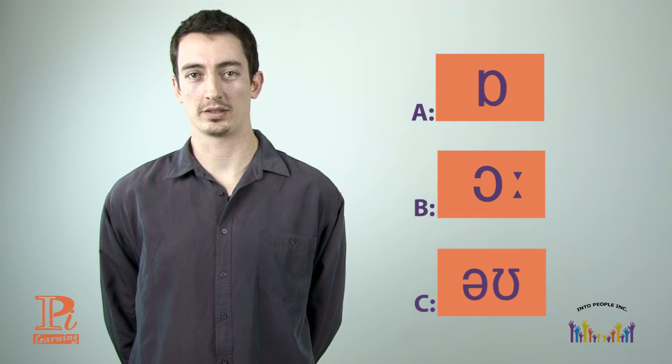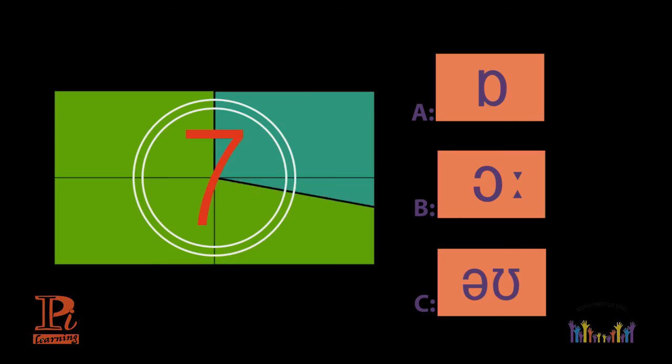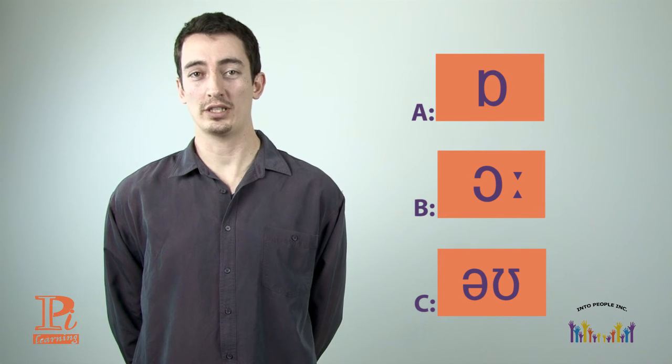Number seven. Showing. Showing. Is it A, B, or C? Time's up. The correct answer is C. O. Showing. O.